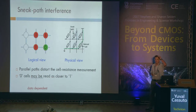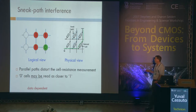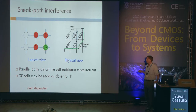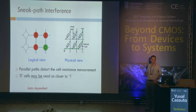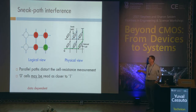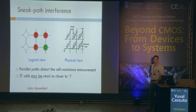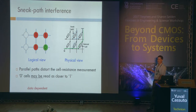The principal issue we are dealing with is called the sneak path. What is a sneak path? We have a cell at a zero state — high resistance — and we want to read it. But coincidentally, we have a path, some rectangle around it with only low resistance cells. What we see is that the measurement of the zero will look closer to one than to zero, and that will cause errors.